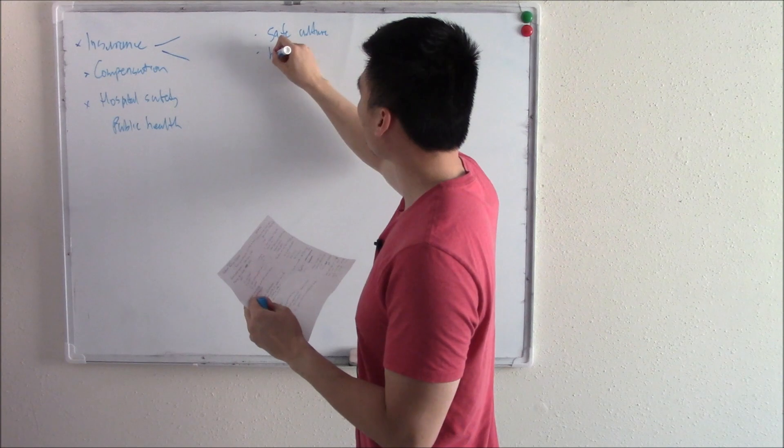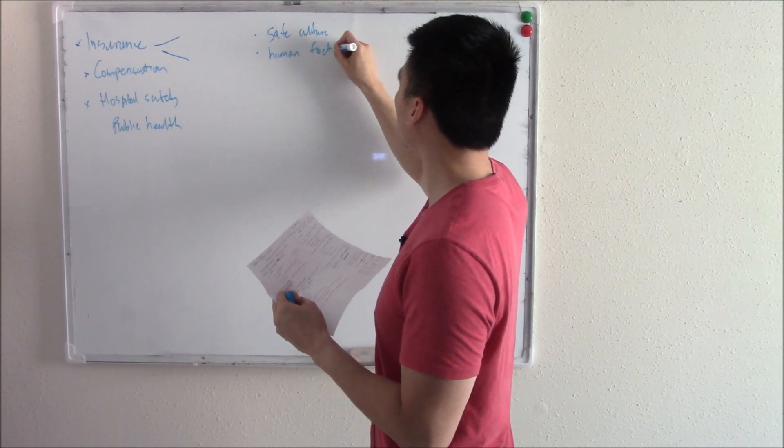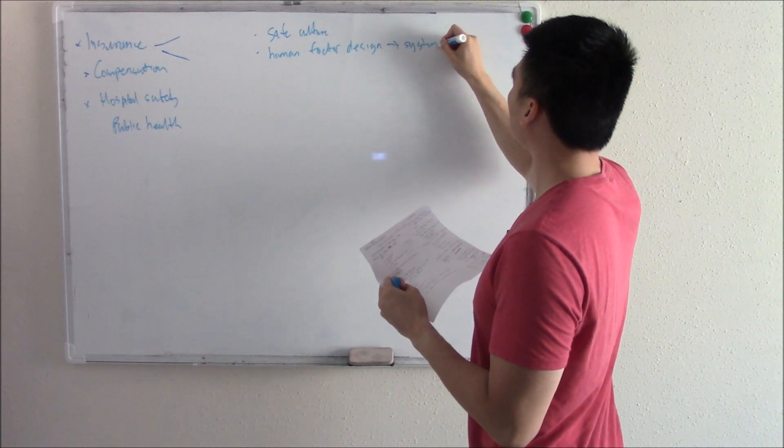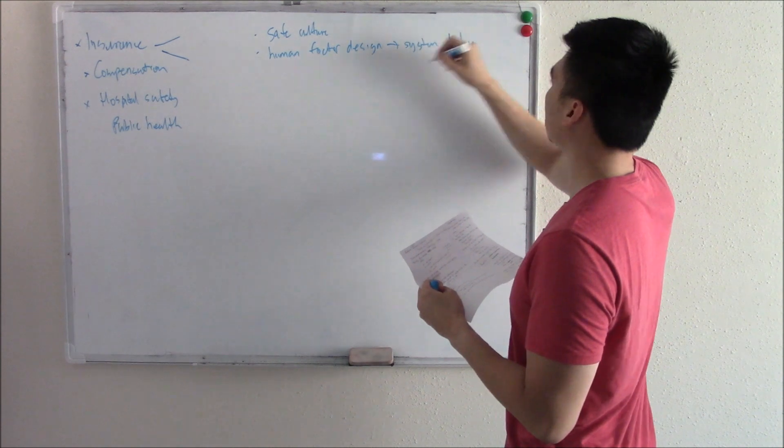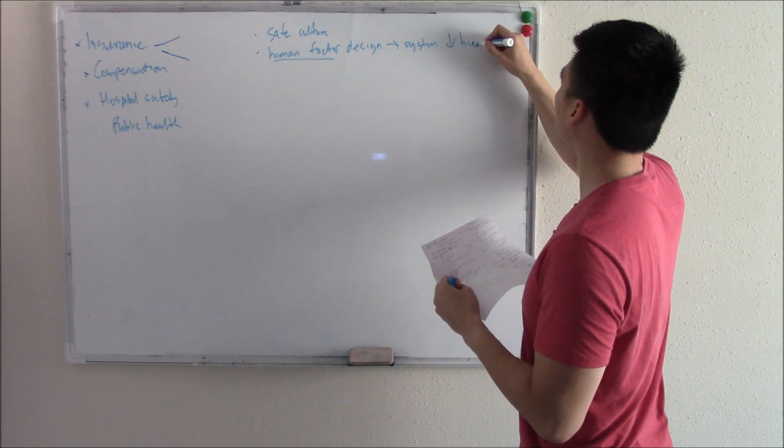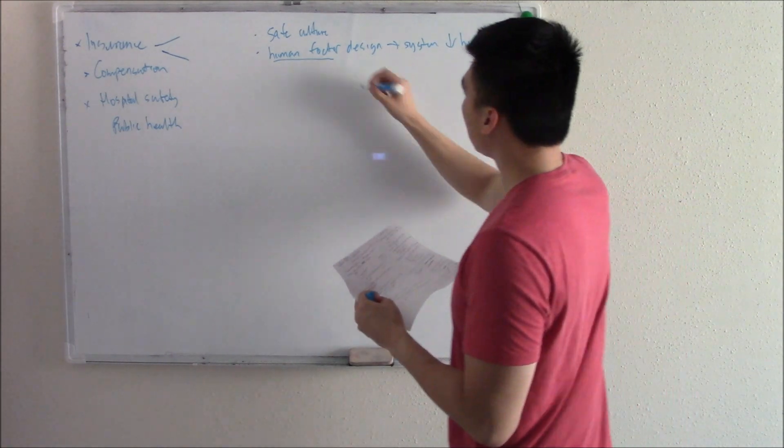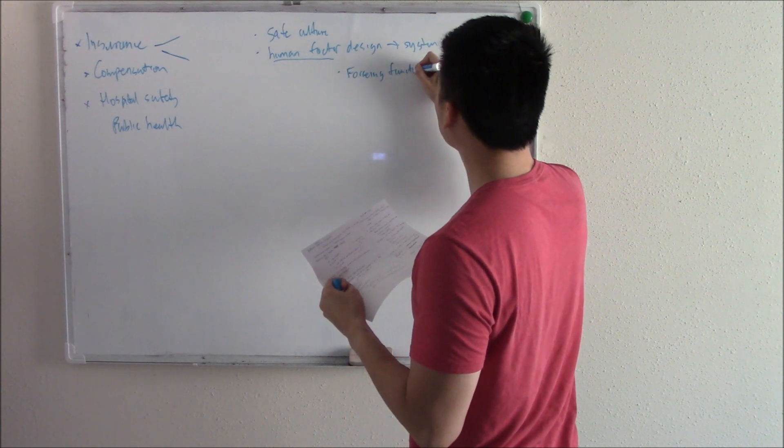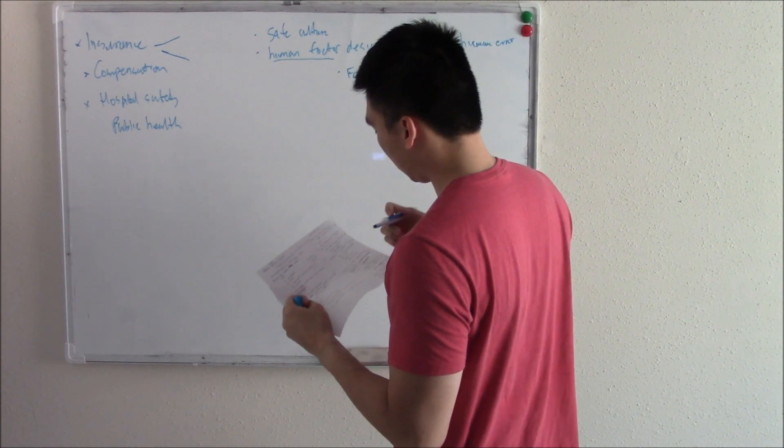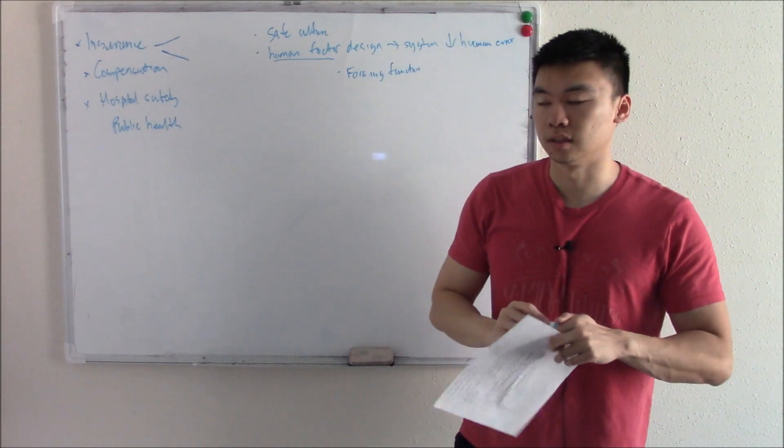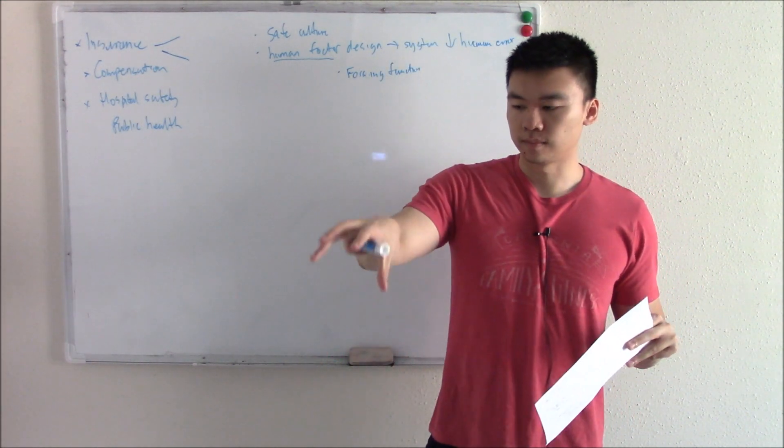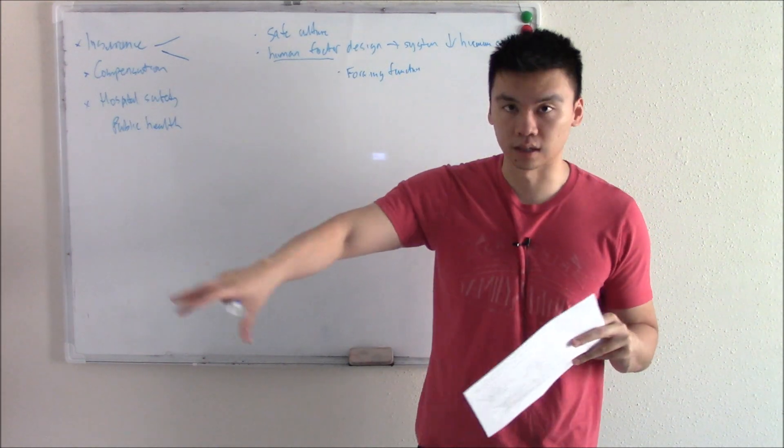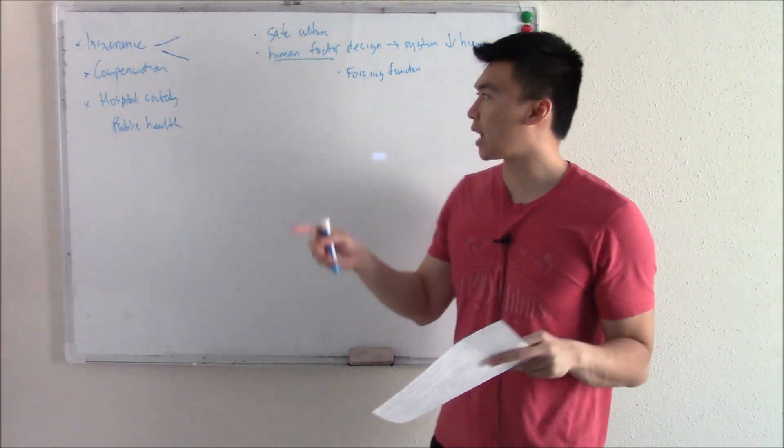Another way they can reduce errors is something called human factor design. You make systems that reduce human errors, human factors. All right, there's something called force, forcing function, where you basically prevent an undesirable action. So maybe a certain provider can't prescribe narcotics or can't prescribe this drug. You're forcing that, that system, that action, and that can prevent some errors.